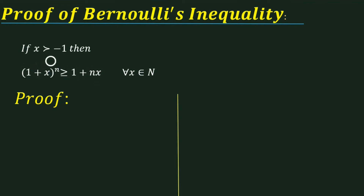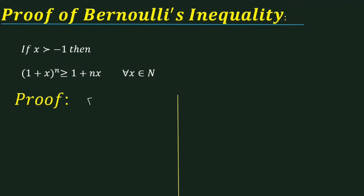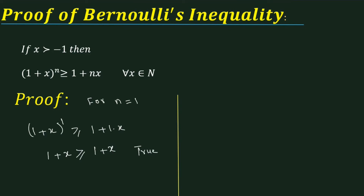For n is equal to 1, after putting n is equal to 1 in the Bernoulli inequality, it will be 1 plus x raised to the power 1, which is greater than or equal to 1 plus 1 times x. So this is 1 plus x which is greater than or equal to 1 plus x, which is of course true.